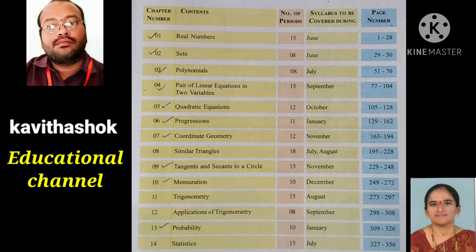The next chapter is pair of linear equations in two variables. In this chapter, we have five topics: graphical method, relationship between coefficients and nature of equations, substitution method, elimination method, and equations reducible to linear equations. These methods are used in VTL.